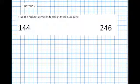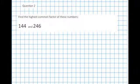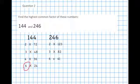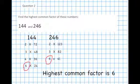So now we do the same thing with the 246. Divide it by 2, then 3, then 4 and so on. And we end up with a list. And we see that in both lists is the number 6. And that is the highest number that is in both lists. So 6 is the highest common factor.